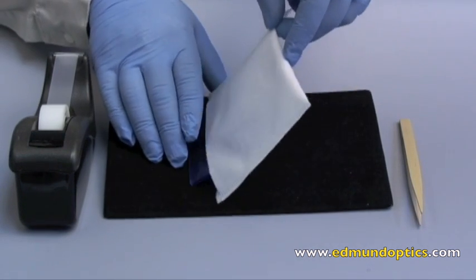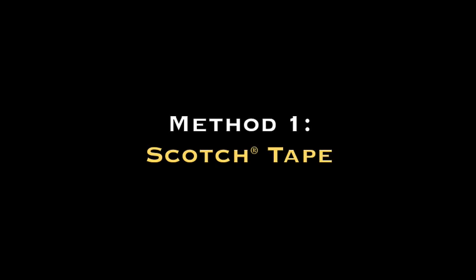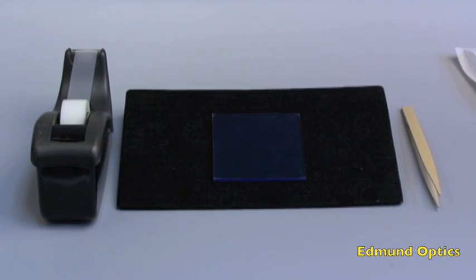In front of me is a square NBK7 window to use as an example. If the window has a protective plastic coating, you will notice that the edges are clear and that the surfaces have a blue tint, almost like a blue filter.